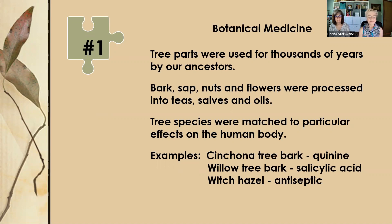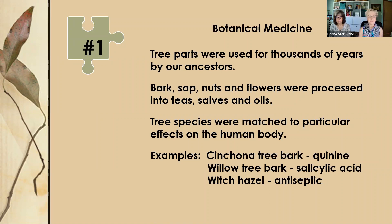Three quick examples: Cinchona trees are native to South America — their bark contains quinine, which was found to be useful in treating malaria. Willow tree bark has an ingredient called salicin; when humans ingest salicin, they turn it into salicylic acid, a precursor to our everyday aspirin. Witch hazel bark, twigs, and leaves can be processed into a liquid that is antiseptic and has been used for treating skin inflammations and irritations — perhaps you've used it for bug bites.